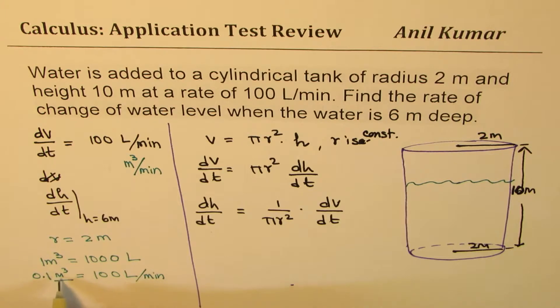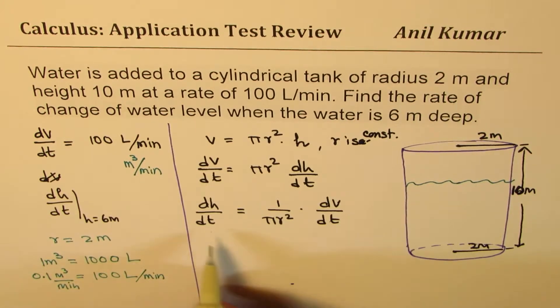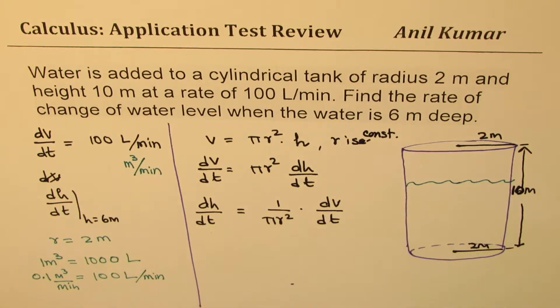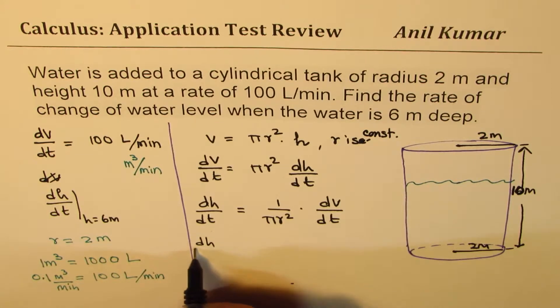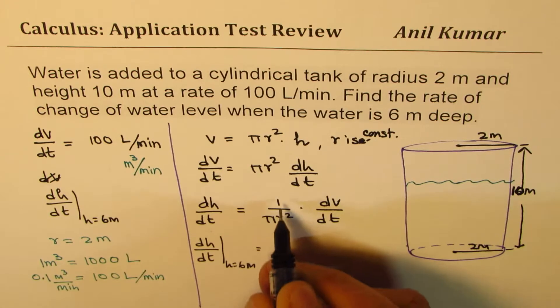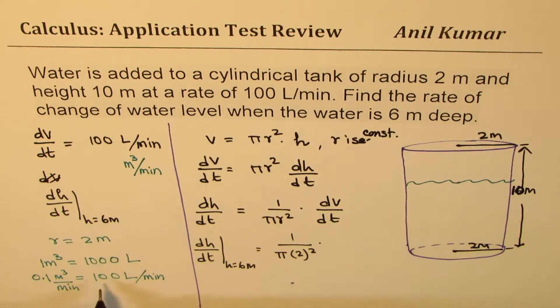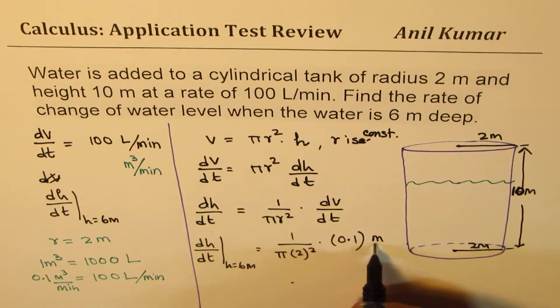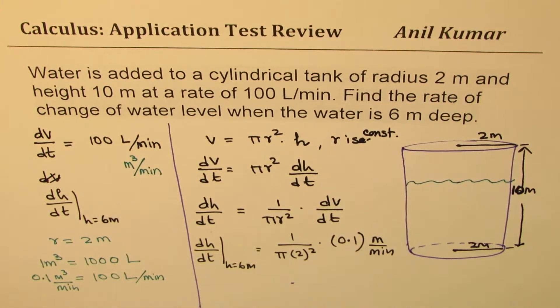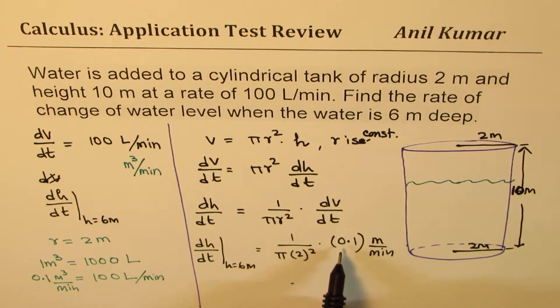So we can say that when height equals 6, that is dh/dt for height equals 6 meters, rate of change of height is going to be 1 over pi, r is 2 meters, so 2 square, times dV/dt is not 100. It is 0.1. And the answer will be meters per minute. So that is the answer.